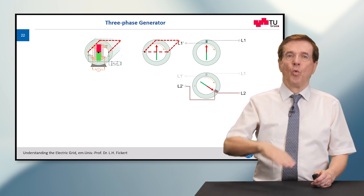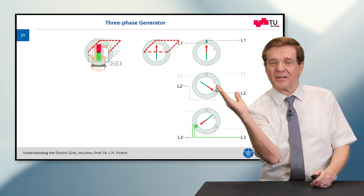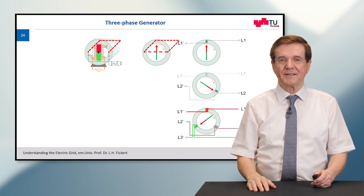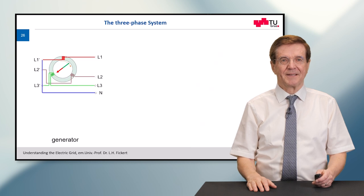So, we add one more coil tilted by 120 degrees, and another, a third coil tilted by another 120 degrees. And all together, we have now the full picture of this electrical generator. Here it is.